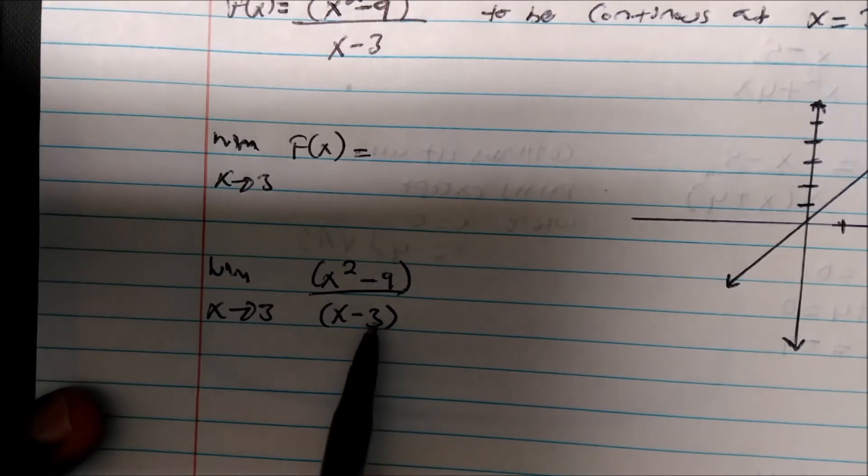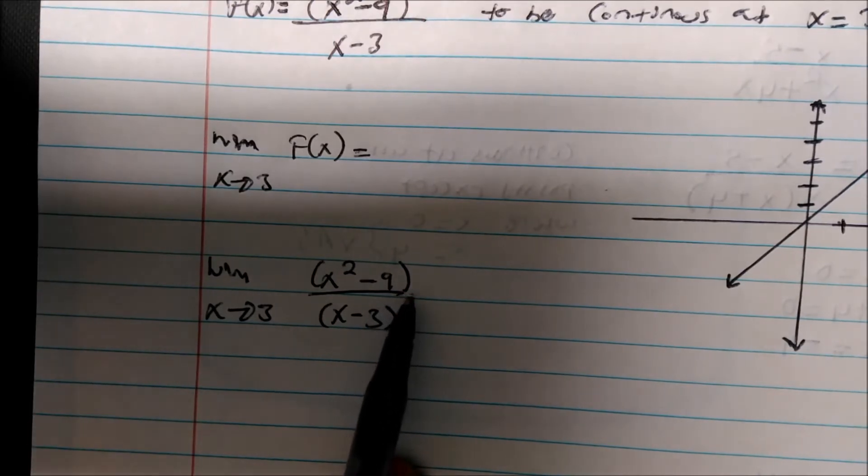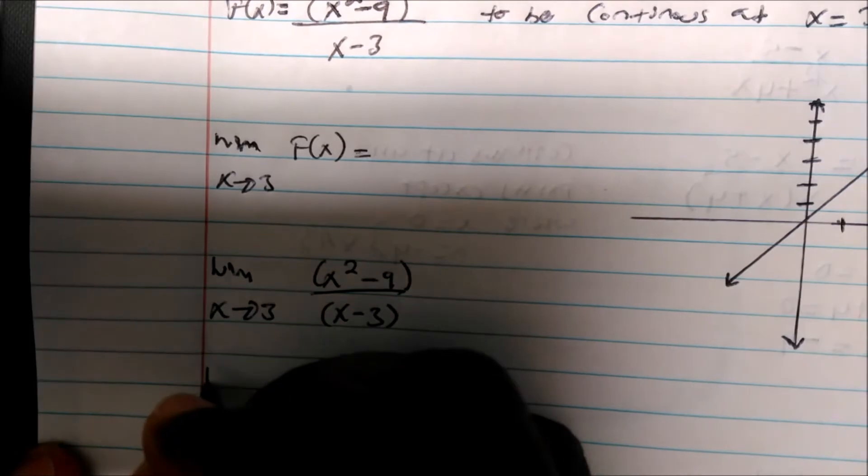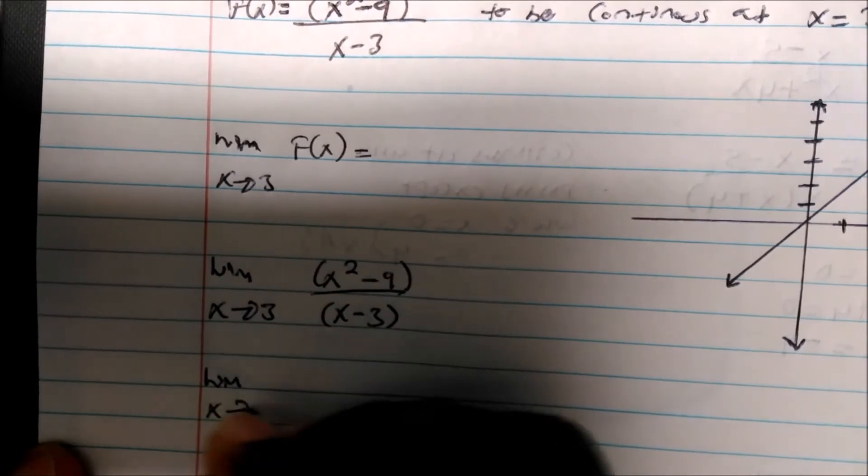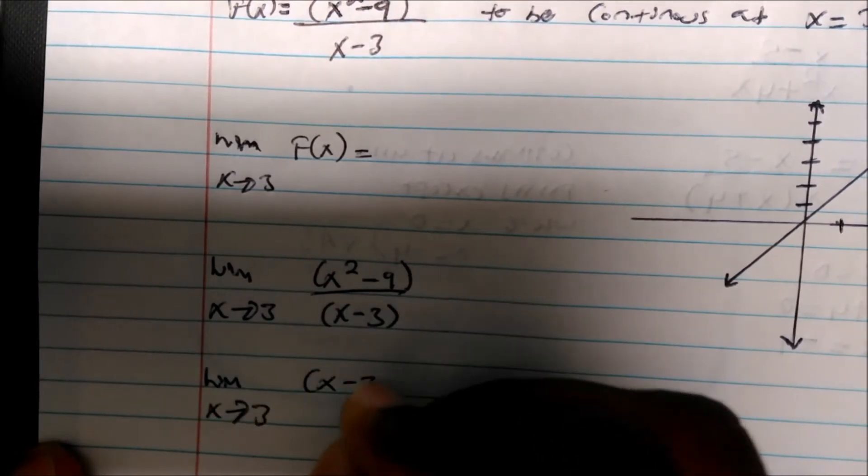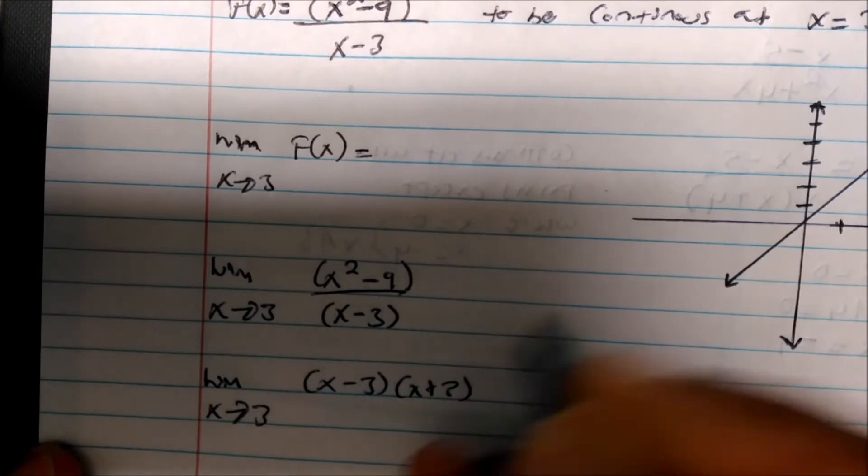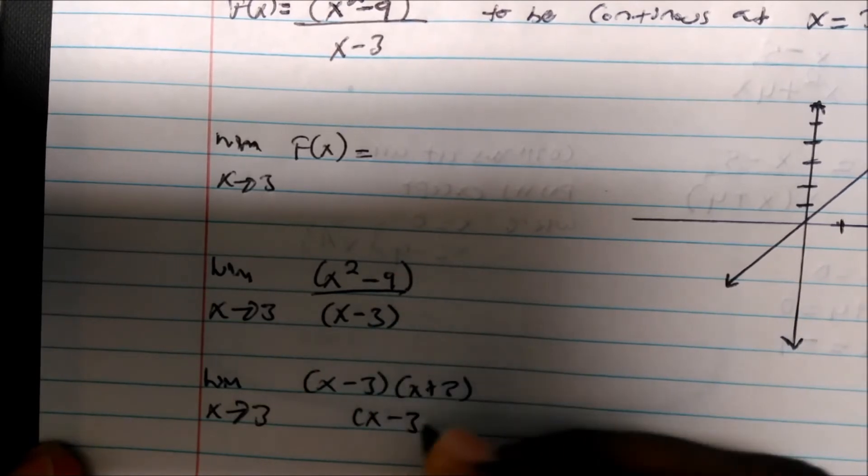Well, this is zero over zero, right? This is indeterminate so we could factor. The limit as x approaches 3 of (x minus 3)(x plus 3) over (x minus 3), right?